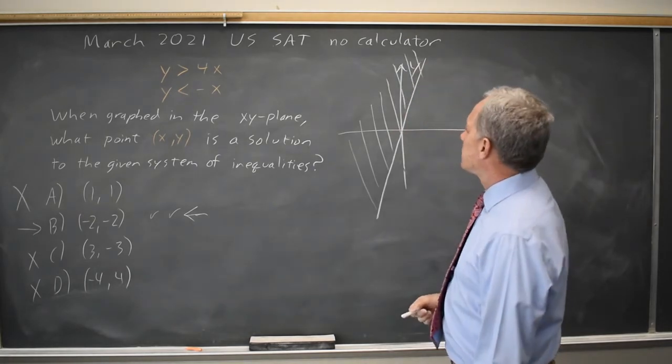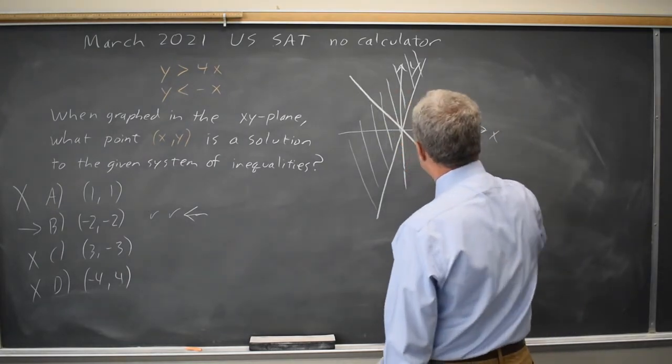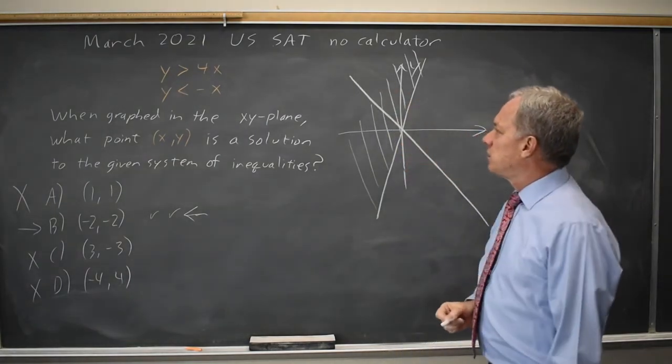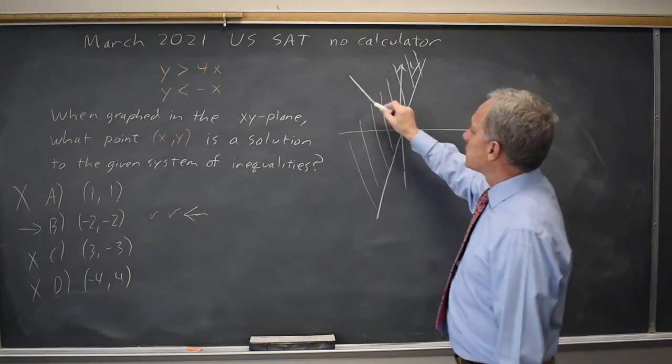Y less than negative X. Well, Y equals negative X is a line through the origin with slope negative 1. And I want Y values less than that, so that's the points below.